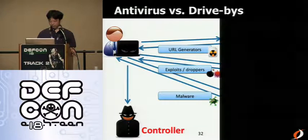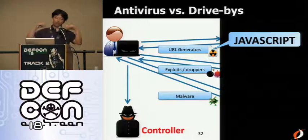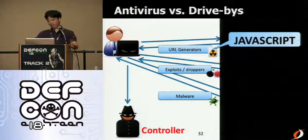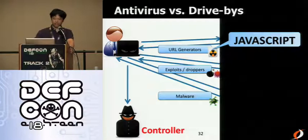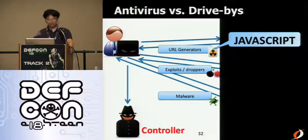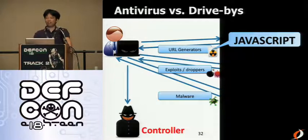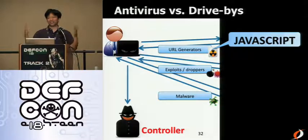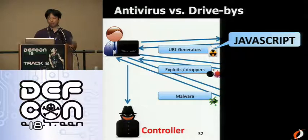We got confused and started calling antivirus companies. We were testing JavaScript exploits, and they essentially said JavaScript is 'sissy stuff' — not hardcore. PEs, assembly — those are hard. But unfortunately, we have to deal with JavaScript when dealing with drive-by-downloads. According to their explanation, in the drive-by-download process: the URL generator is JavaScript, the exploits are JavaScript, but the malware itself is a PE binary. They said they'd detect the PE part. But the malicious domain serving malware is usually taken down two or three days later, while the injected domain like Digg continues serving the malicious iframe for a long time. We want to detect that JavaScript.